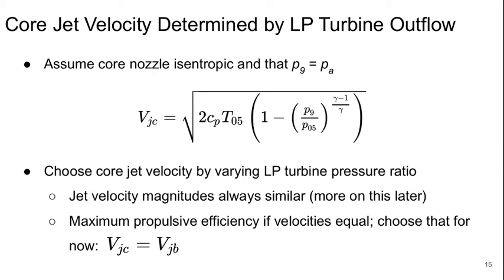In practice, we want these jet velocity magnitudes to be similar. We'll talk a little bit more about this later today. And for now, let's say that we'll get the maximum propulsive efficiency if the velocities are equal. So if we choose that for now, we'll get the velocity of the jet in the core equal the velocity of the jet in the bypass, and this provides a constraint on the system.